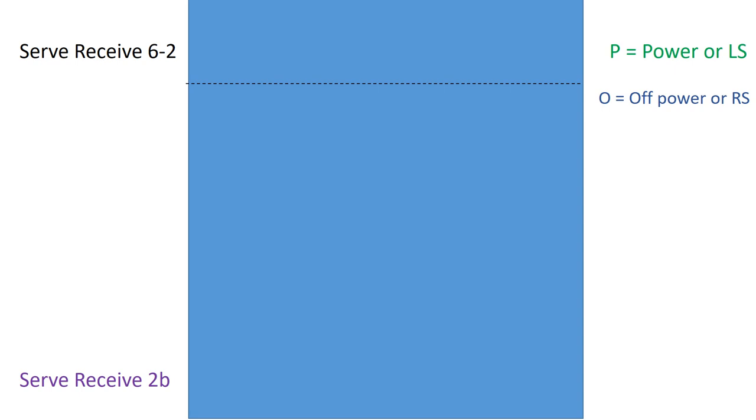Now we're going to take a look at an alternative version of the serve receive. So it's going to start off the same. Our power is going to be pushed up by the setter. Now we're going to have the two back row players here actually push over. Off power is going to drop back. Now instead of this middle hitter coming over here to not be a passer, they're actually going to drop back and be a passer.